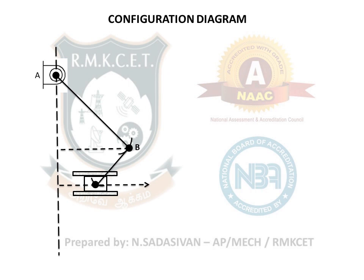The horizontal velocity vector of the slider is given in the question as 1 meter per second, which is the velocity of point C. Mark the angles and the links. That completes the configuration diagram.